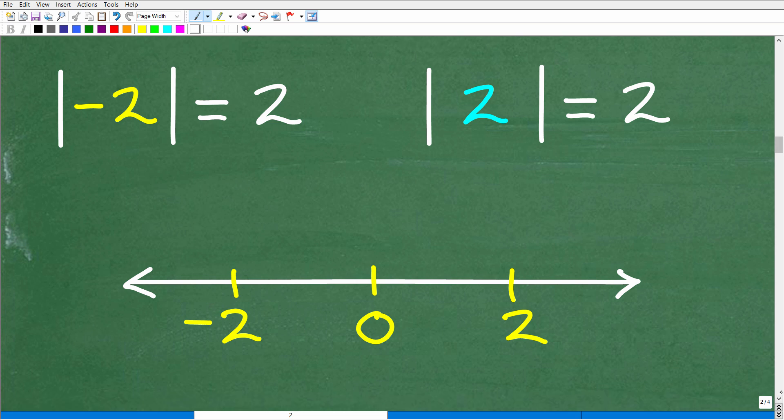Now, this is going to be a real quick review, but the definition of absolute value is the distance a number is from 0 on a number line, okay? So let's take a look at these two numbers, negative 2. So here's negative 2 right there, and here is positive 2.